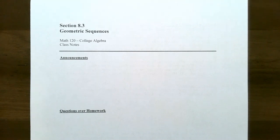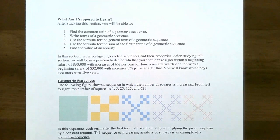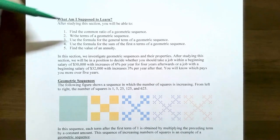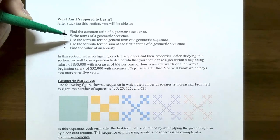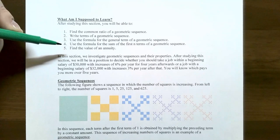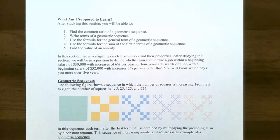Hi everyone, it's Professor Pemberton. In this video, we're going to look at geometric sequences. This is going to seem very similar to the last section about arithmetic sequences, except we're going to be talking about geometric sequences and how to find a common ratio, how to write the terms of a geometric sequence, how to find a formula for the nth term, and in the next video we'll talk about annuities and the sum of the first n terms.